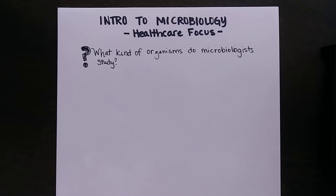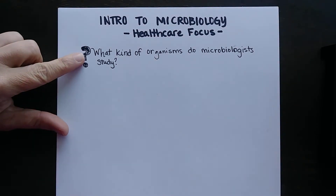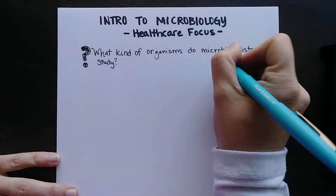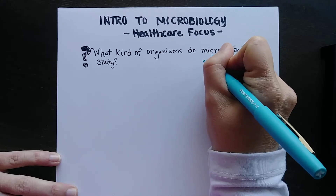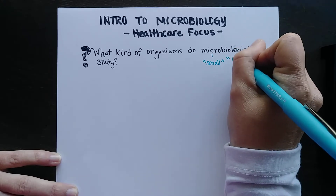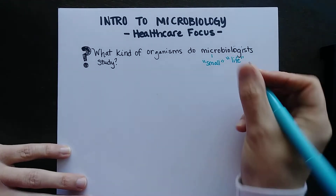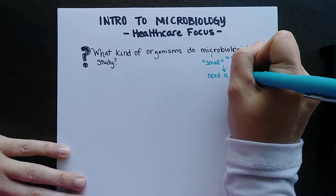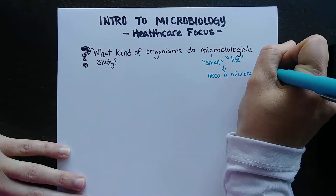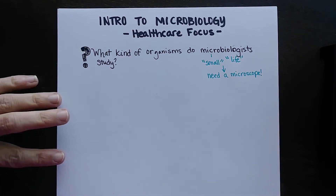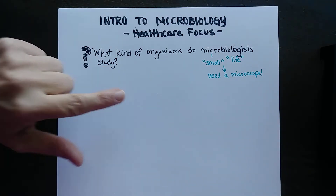The first question is: what kinds of organisms do microbiologists study? Well, microbiologists study small things — micro means small and biology means life — so they study small forms of life. Really what we mean is that they need a microscope; these organisms are too small to be seen with the naked eye.